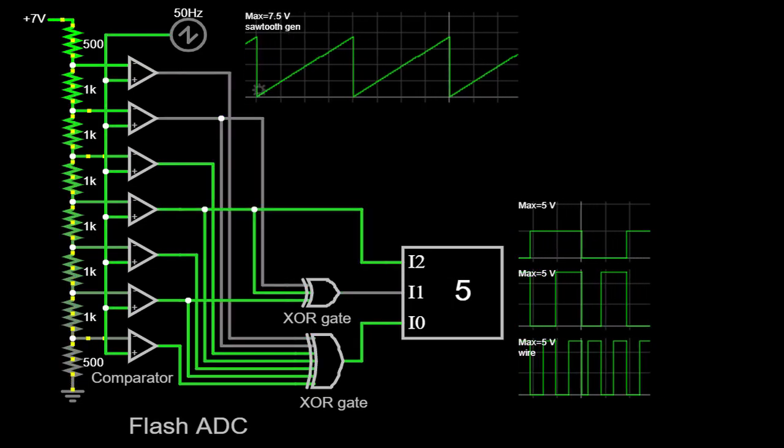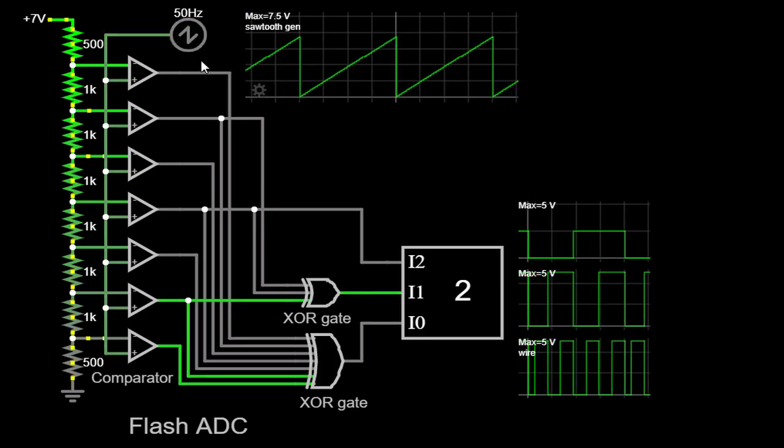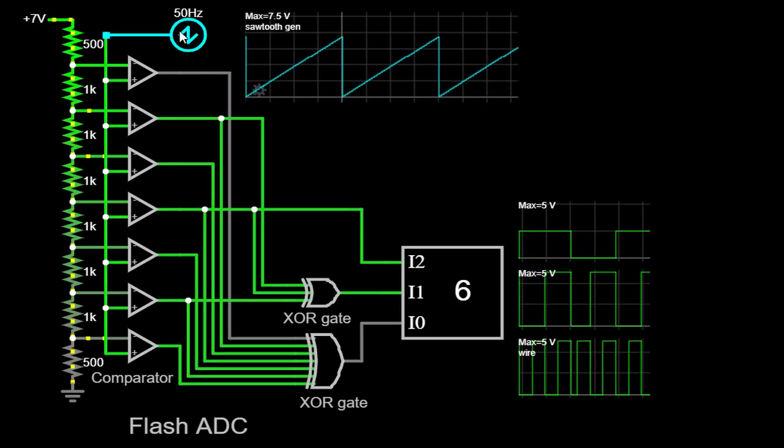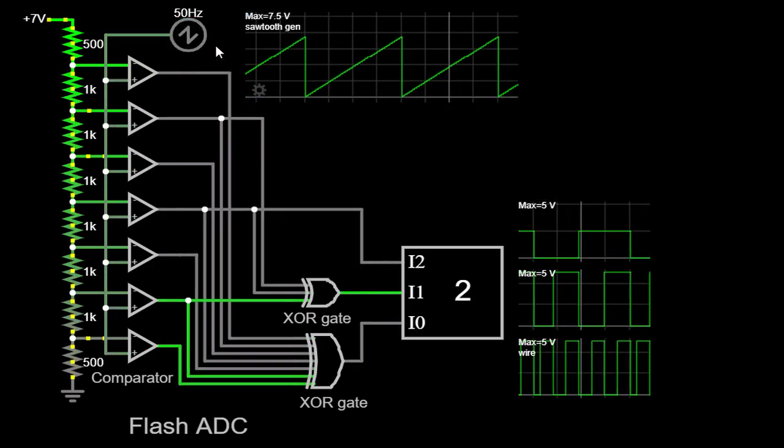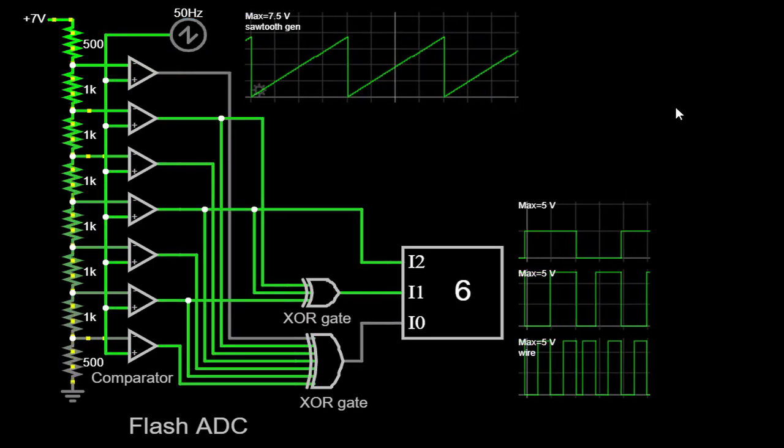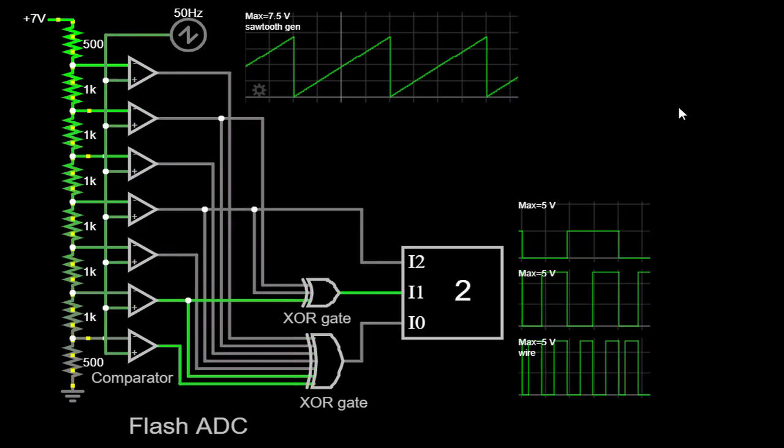Specifically, we will be utilizing a 50Hz 3.75V sawtooth waveform as our input signal, providing a real-world example to better understand how Flash ADCs operate. So, let's dive deeper into this exciting topic.